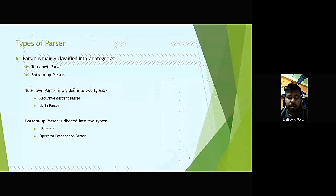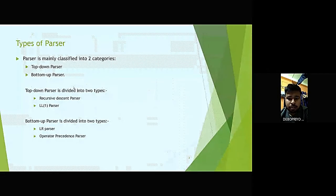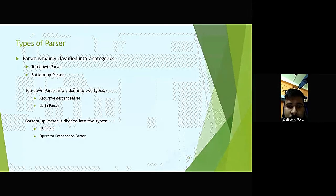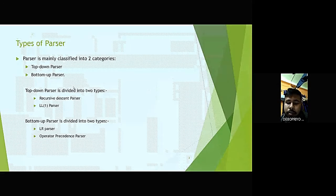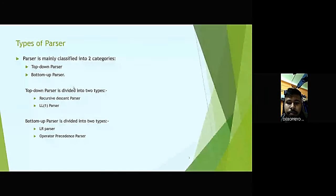There are different types of parsers. Parser is mainly classified into two categories: top-down parser and bottom-up parser. Top-down parser is divided into two types: one is recursive descent parser and another one is LL1 parser.